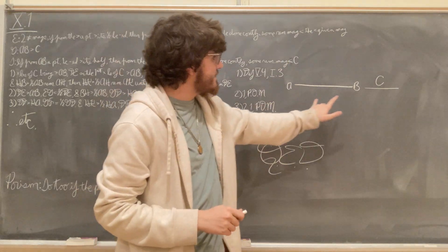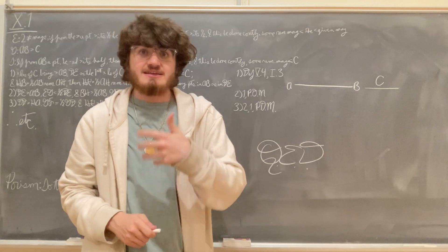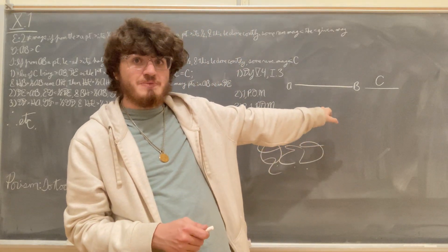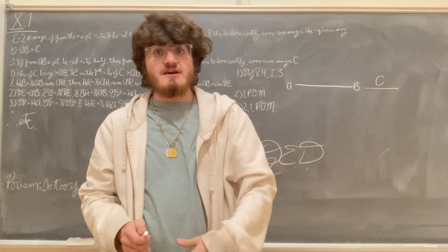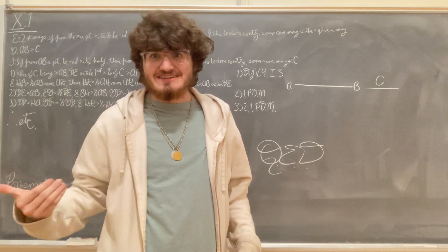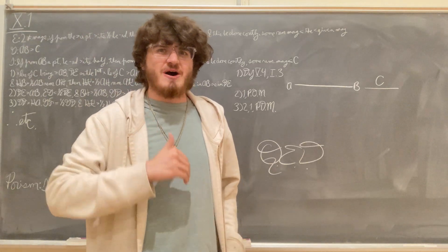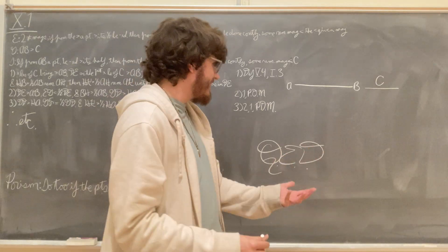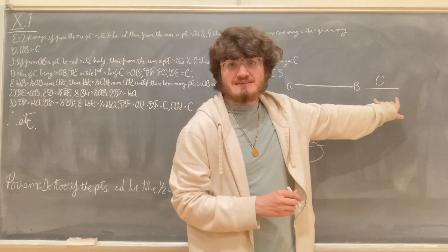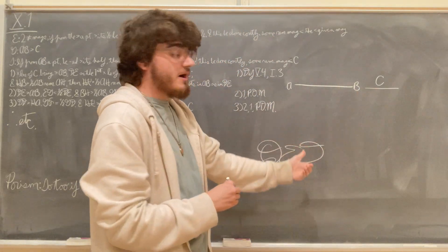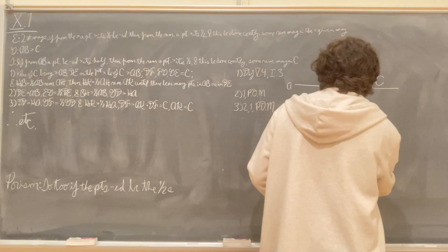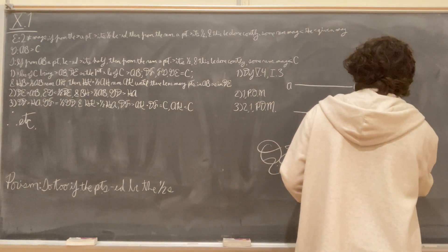Now because A, B and C are two magnitudes of the same type, we know that there will be some multiple of the lesser magnitude C which exceeds the greater magnitude A, B. This we get from Euclid Definition 5.4, which says that magnitudes have a ratio to one another which, when multiplied, are capable of exceeding each other — also stated as the Axiom of Archimedes. So our first step is to create the magnitude DE, which is the first such multiple of C that exceeds A, B.